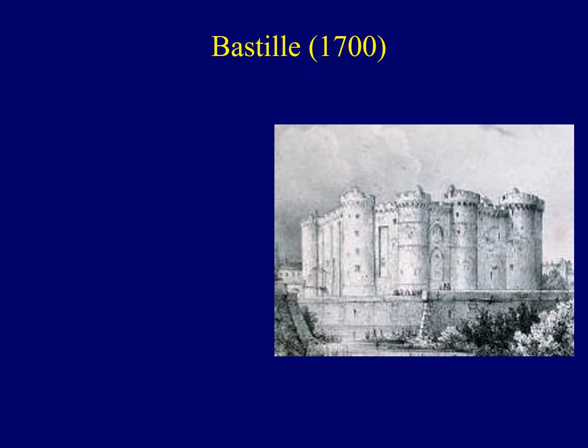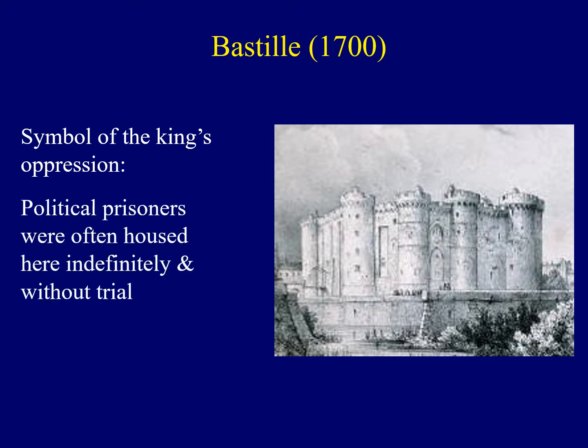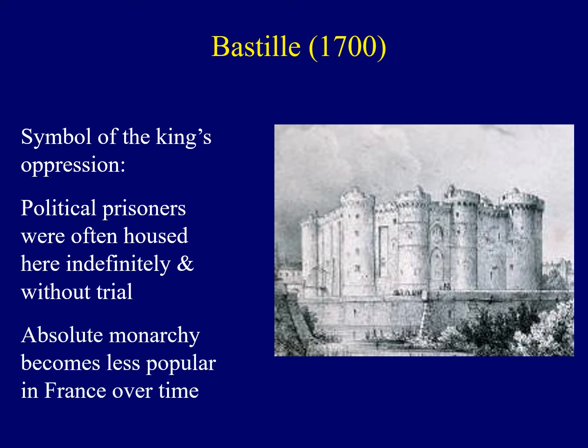Support for Louis XIV began to wane by the early 1700s, and a symbol emerged of the king's oppressive power: the Bastille, which was a prison. Political critics were often taken to this building, held there indefinitely, and never received a trial. What we see is that support for absolute monarchy over time lessened in France, and we're going to see how it results in a revolution a little bit later in the semester.